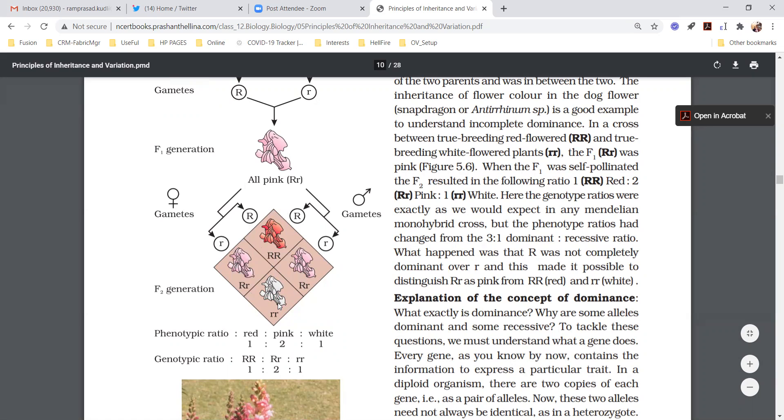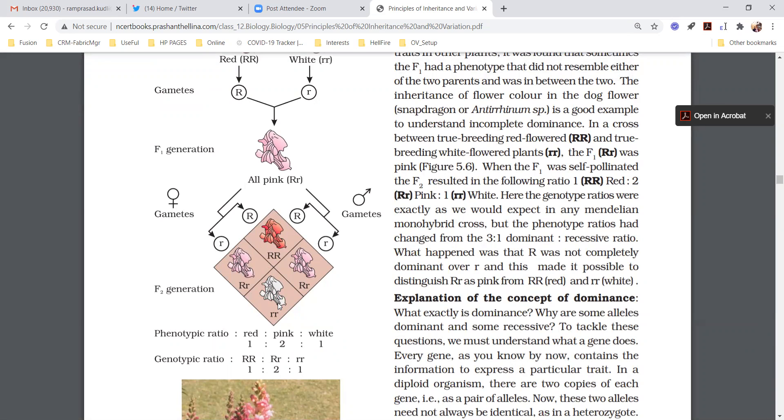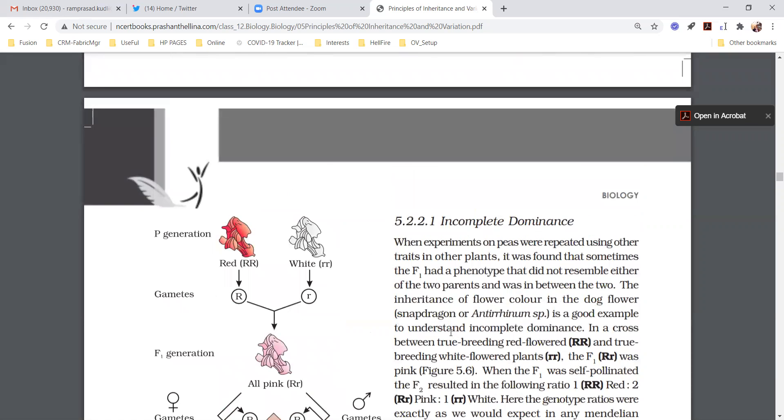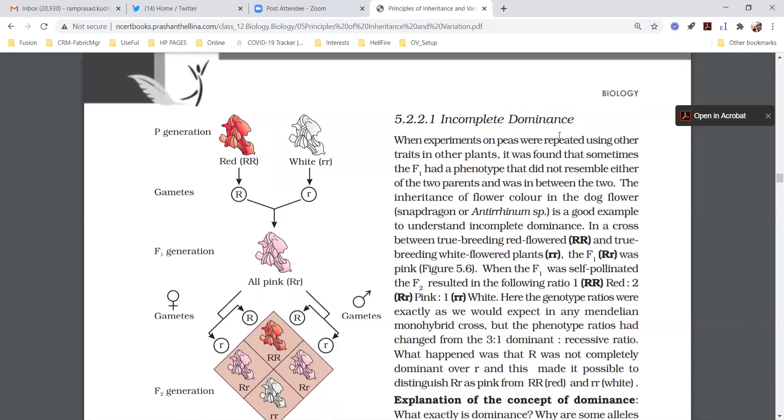If we observe clearly, phenotypic appearance is one red, two pink, one white. And genotypic ratio also, one homozygous red flower, heterozygous pink flower, and one homozygous recessive white flower. In this case, both phenotypic ratio and genotypic ratio are the same, 1:2:1. This type of inheritance pattern is called incomplete dominance.